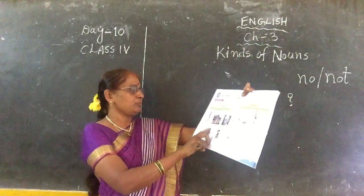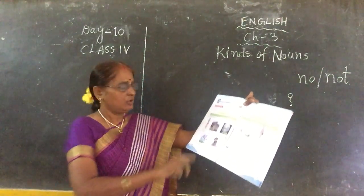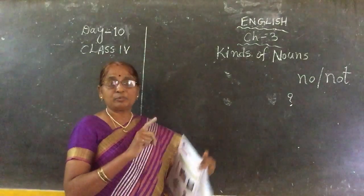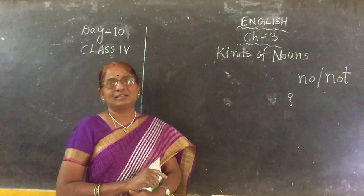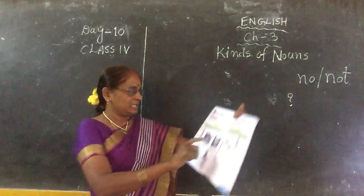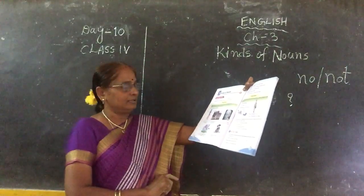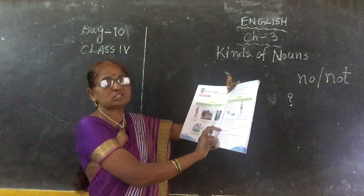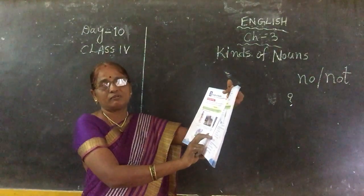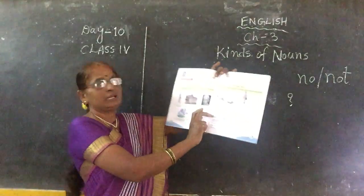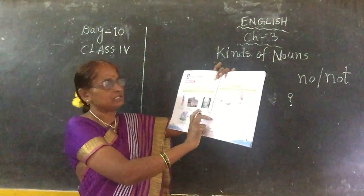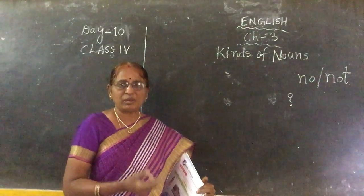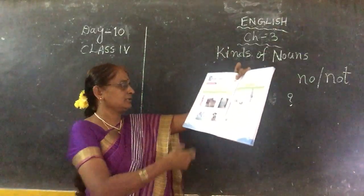Coming to sentence B: We are going to Udaipur for a school picnic. Udaipur is the name of a place — it begins with a capital letter U. Coming to sentence C: Jawaharlal Nehru was the first prime minister of our country, India. Name of a person — Jawaharlal Nehru. India is the name of a place, beginning with capital letter I.